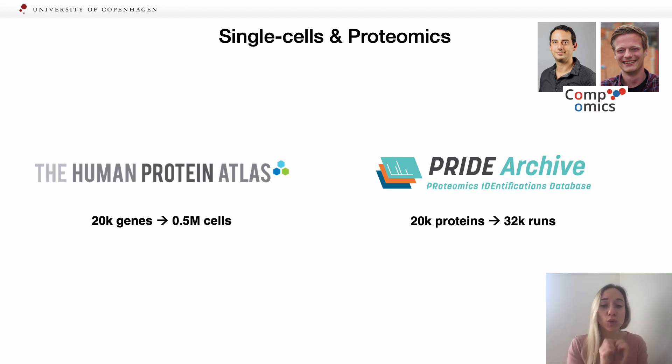That gave us two very big matrices. In single-cells we have 20,000 genes and half million cells, while in Pride we have 20,000 proteins and 32,000 runs. They are big, but that's not the main problem.